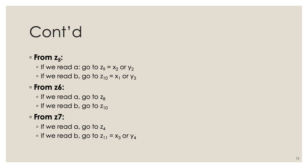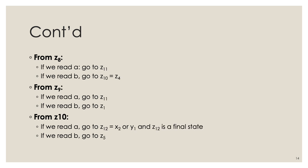From Z7 reading 'a' we go to Z4. Reading 'b' from Z7 gives new combination X3 or Y4, called Z11. From Z8 reading 'a' we go to Z11; reading 'b' we go to Z4. From Z9 reading 'a' we go to Z11; reading 'b' we go to Z1. From Z10 reading 'a' we get new combination X2 or Y1, called Z12 — a final state. Reading 'b' from Z10 we go to Z5.